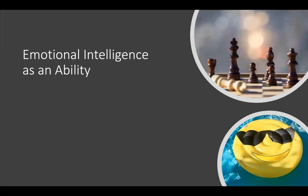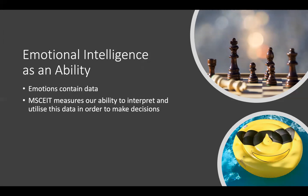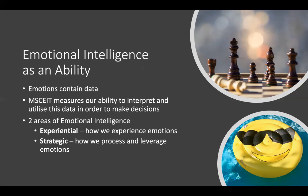So what do we mean when we say emotional intelligence as an ability? Firstly, emotions contain data. Emotions bring information that we need to take on board, as well as other rational information. The MSCEIT measures our ability to interpret and utilize this data when making decisions — how we take in emotional information and then use it. This comes to the heart of the MSCEIT, which divides emotional intelligence into experiential and strategic areas, giving us a really strong framework to work within.